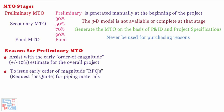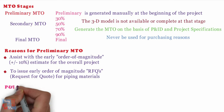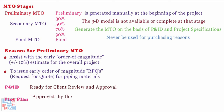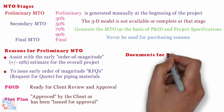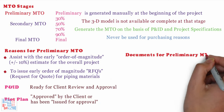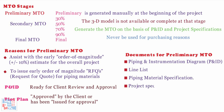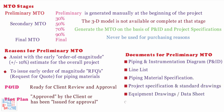The preliminary piping MTO is only done once the P&IDs are ready for client review and approval, and a plot plan has been approved by or issued to the client for approval. The following input documents are required for the initial MTO: piping and instrumentation diagram (P&ID), line list, piping material specification, project specification and standard drawings, equipment drawings and data sheets if available, and instrument hookup.